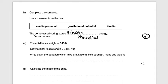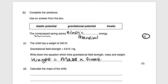Next question: the child has a weight of 343 newtons and gravitational field strength is 9.8 newtons per kg. Write down the equation which links gravitational field strength, mass, and weight. Weight is equal to mass multiplied by gravitational field strength. That would be worth one mark.